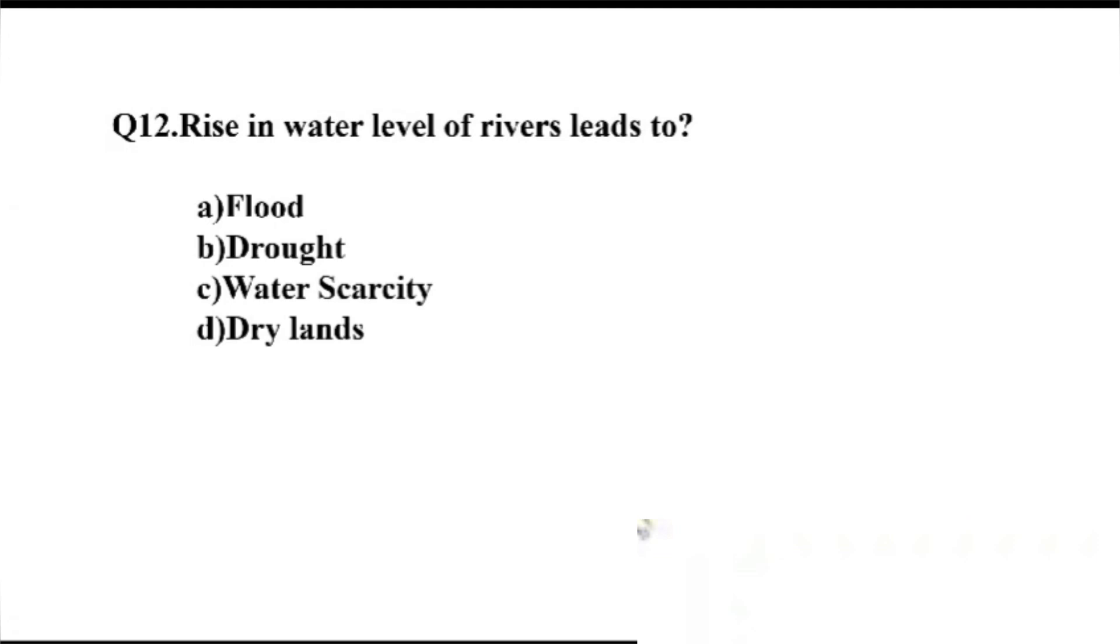Question number 12. Rise in water level of rivers leads to dash. Option A, flood. B, drought. C, water scarcity. D, dry lands. The right answer, Option A, flood.